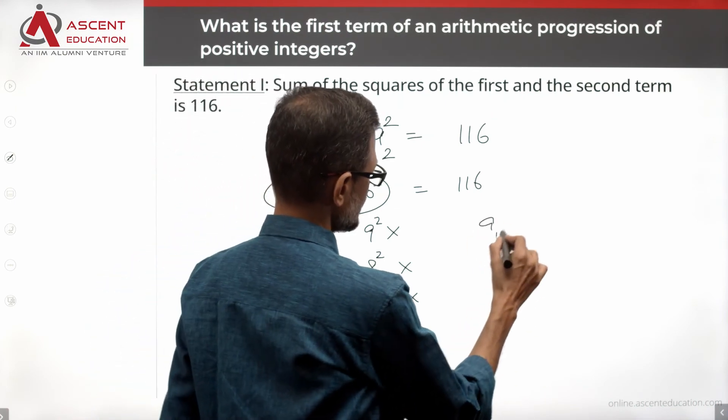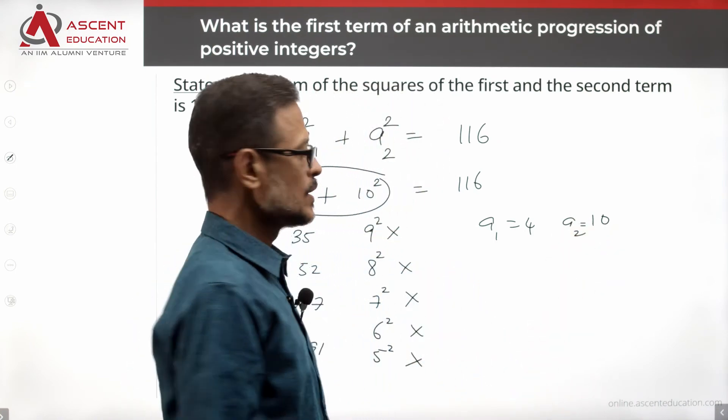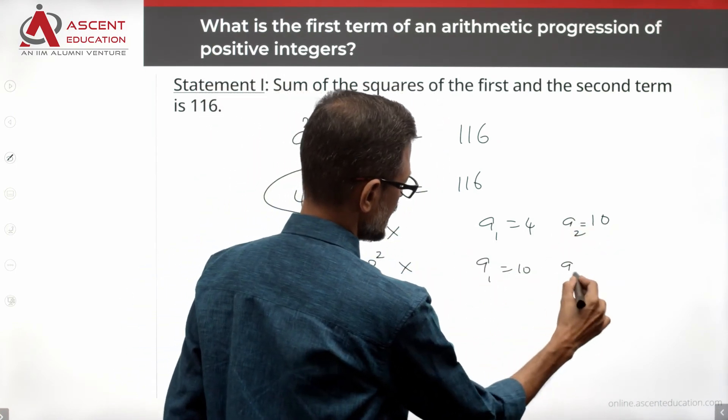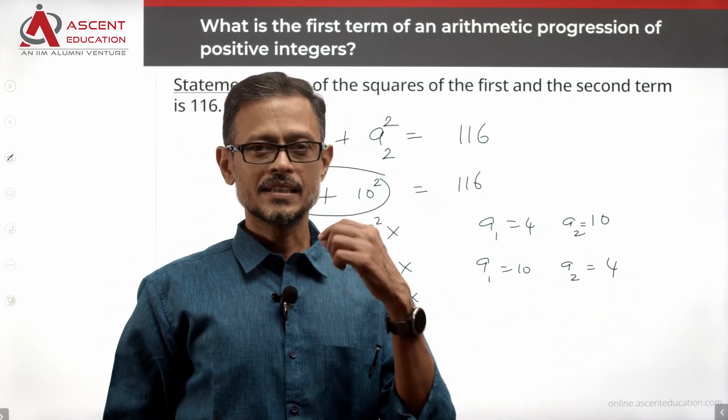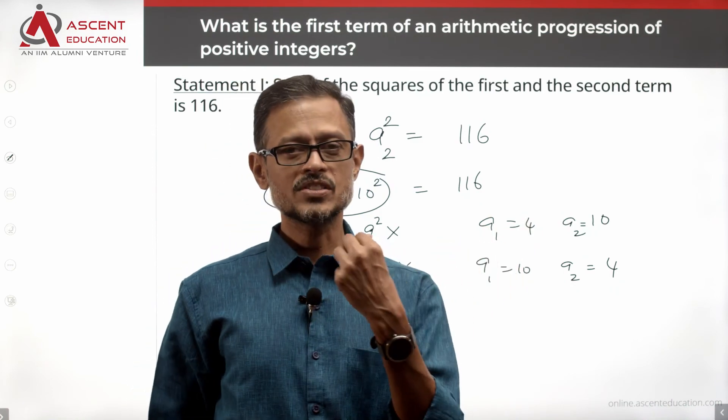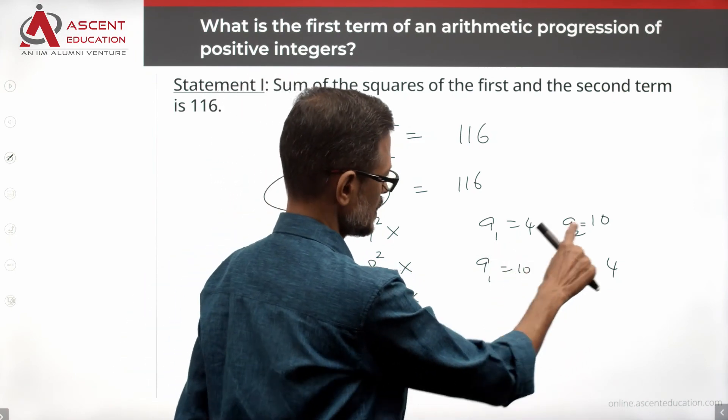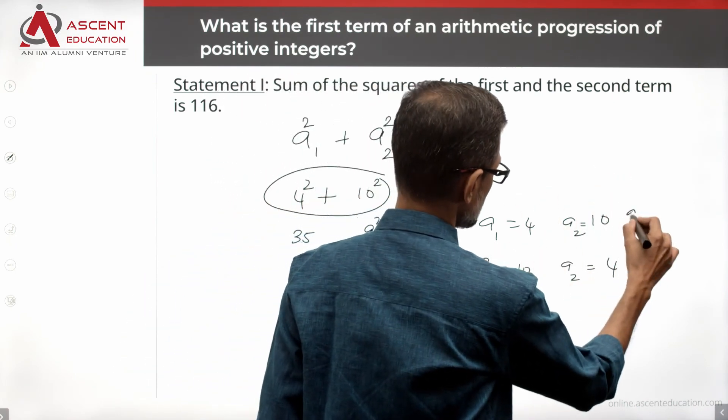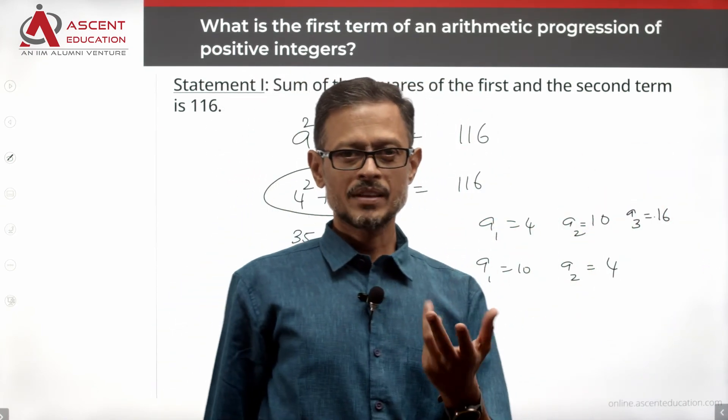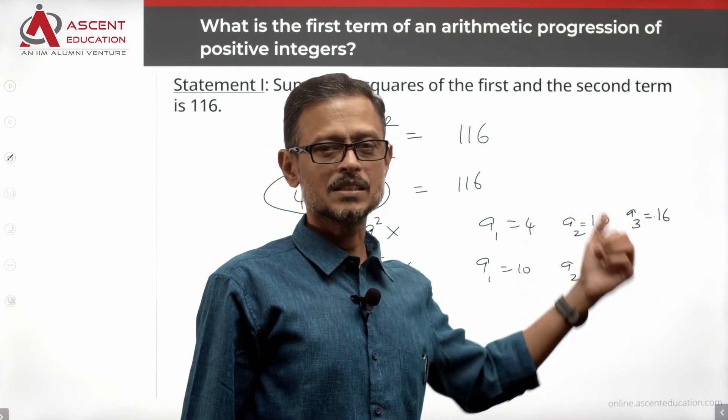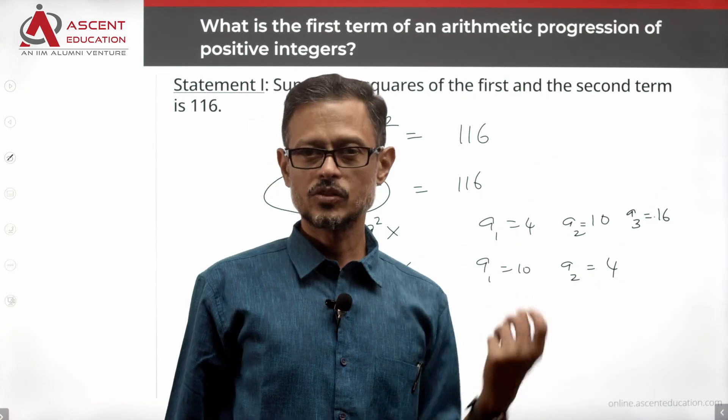So a1 is equal to 4, A2 is equal to 10. Is something that we will think. Why can't it be a1 is equal to 10 and a2 is equal to 4? It could be a decreasing arithmetic progression. 4, 10. The third number is going to be equal to 16 and so on and so forth. This seems to be a possible thing. The first term, second term, third term, it is an arithmetic progression of positive integers. Good. So this is one possibility.